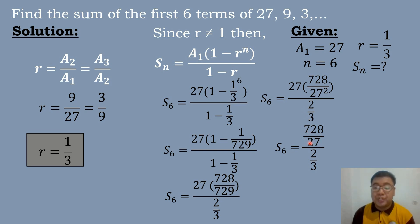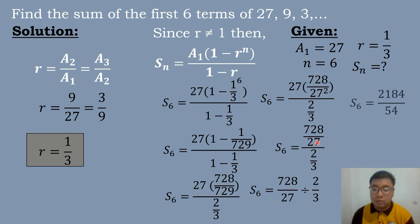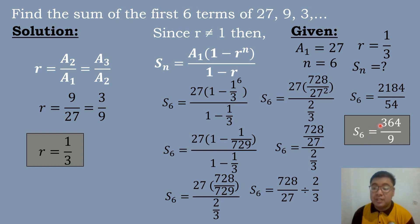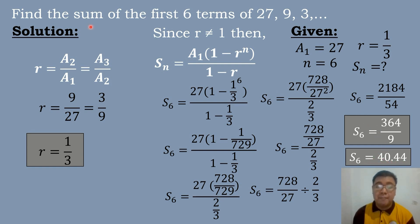So 728/27 divided by 2/3, cross multiplying gives 728 times 3 equals 2,184 over 27 times 2 equals 54, in lowest terms equals 364 over 9. So the sum of the first 6 terms of the geometric sequence 27, 9, 3, and so on is equal to 40.44.